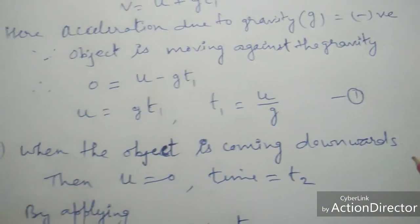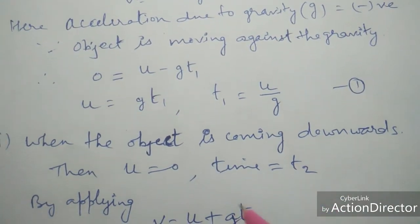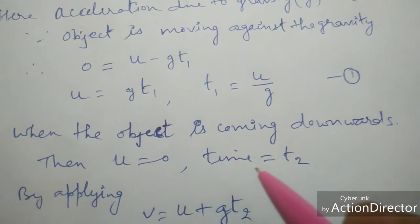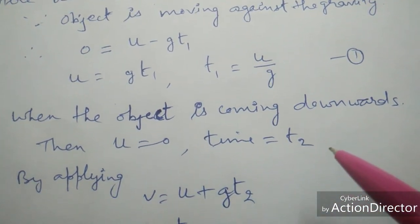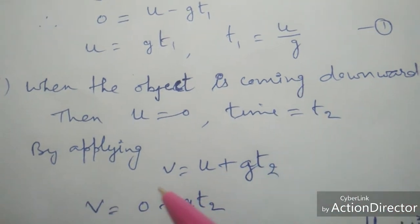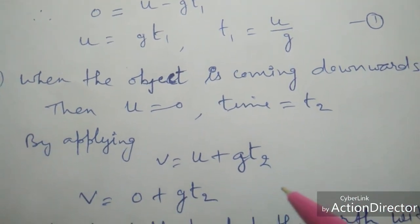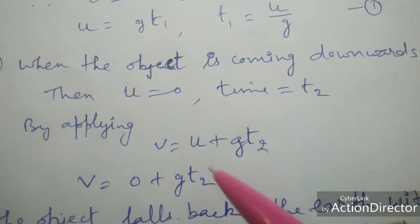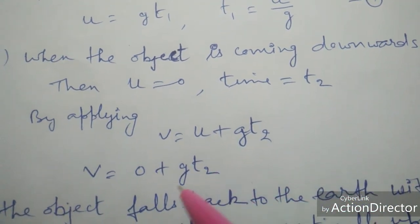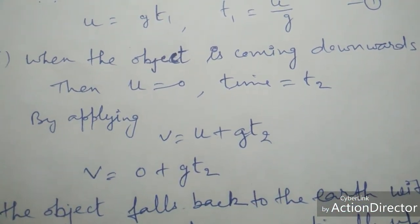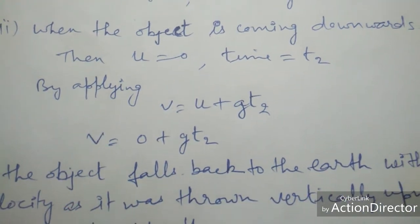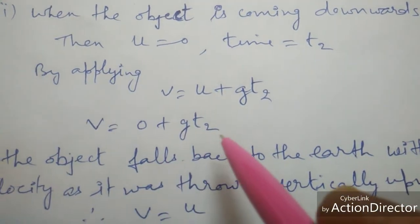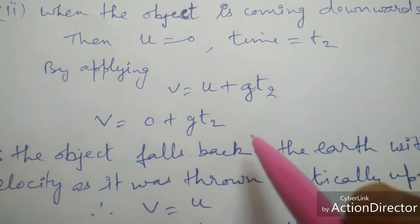Now second case: when the object is coming downward, here u = 0 and time is equal to t2. By applying the same formula v = u + g·t2, since u = 0, we obtain v = 0 + g·t2, that is v = g·t2.